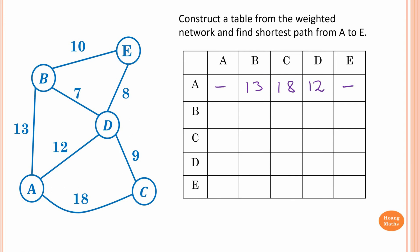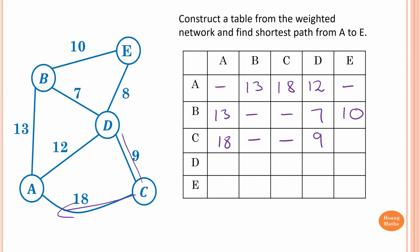Moving to vertex B: B to A is 13, B to B is zero — leave it blank. From B to C, no direct connection — leave it blank. B to D is 7, B to E is 10. For C: C to A is 18, C to B has no direct connection — leave it blank. C to C is zero. C to D is 9. C to E, no direct connection — leave it blank. For D: D to A is 12, D to B is 7, D to C is 9, D to D is zero — leave it blank. D to E is 8.